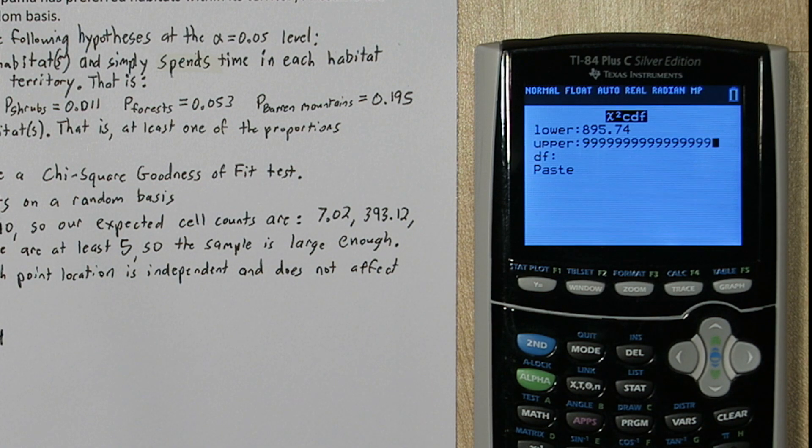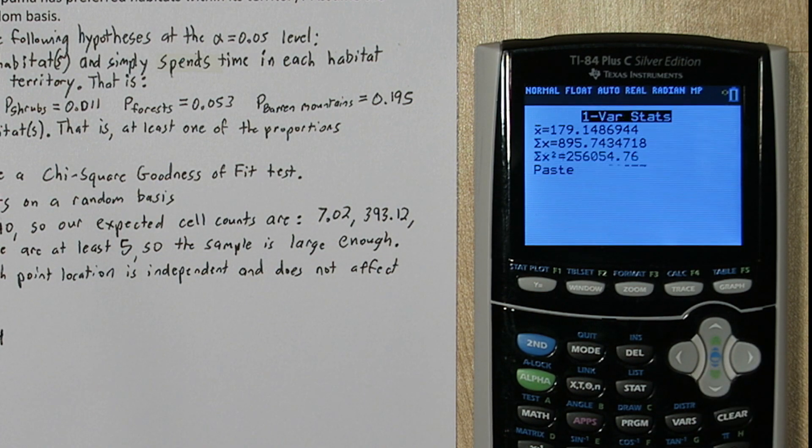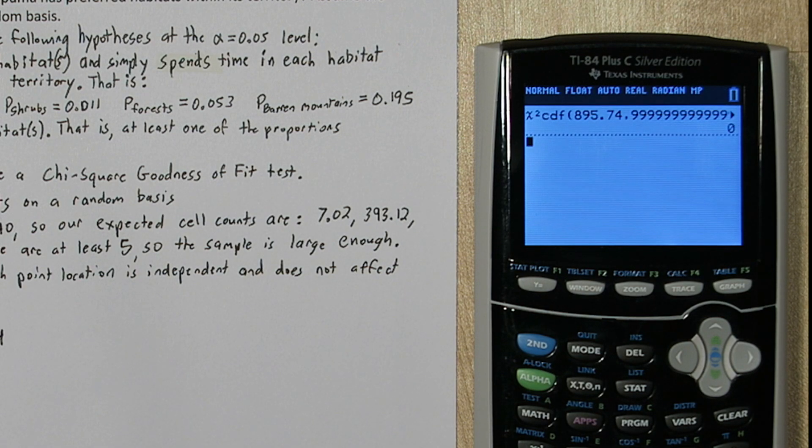And for degrees of freedom, we're going to do how many habitats we had, minus one. So there was five habitats, minus one, we have four. I'll press paste and then enter again. It says my p-value is approximately zero.